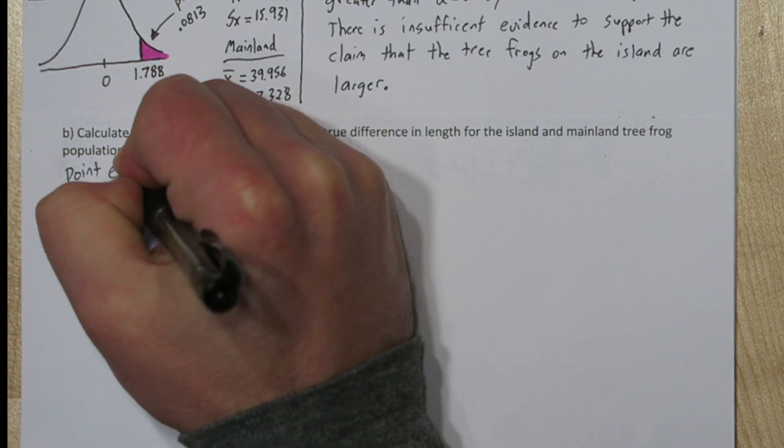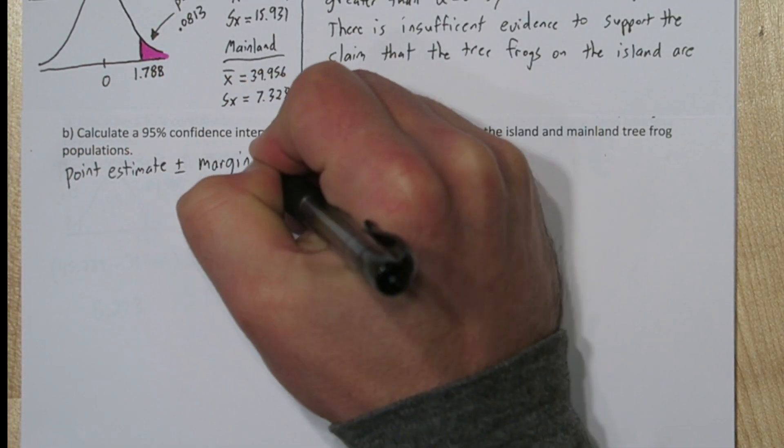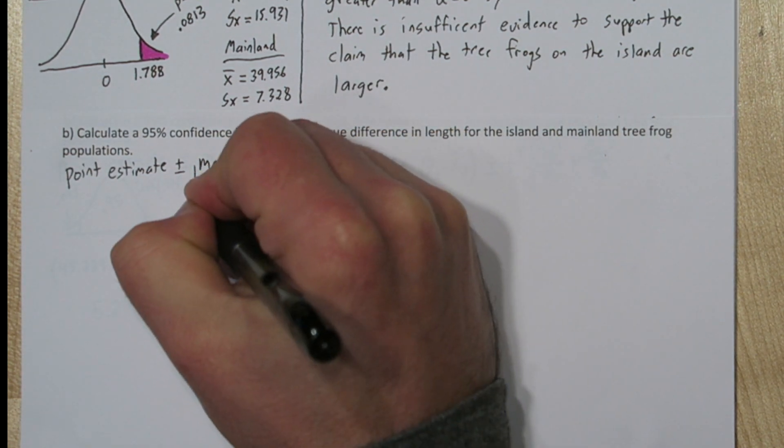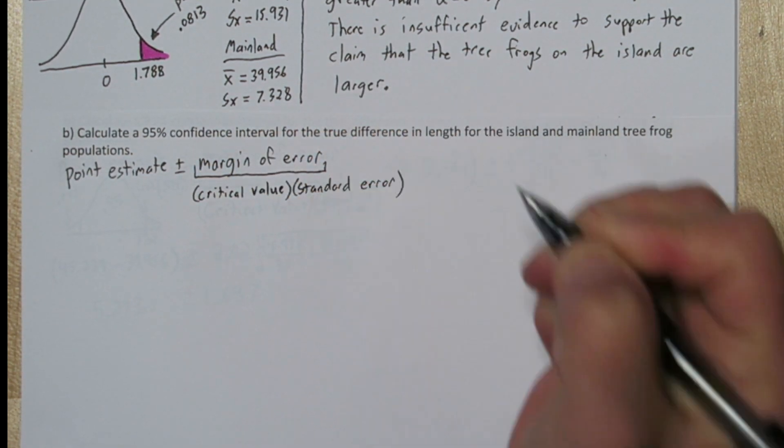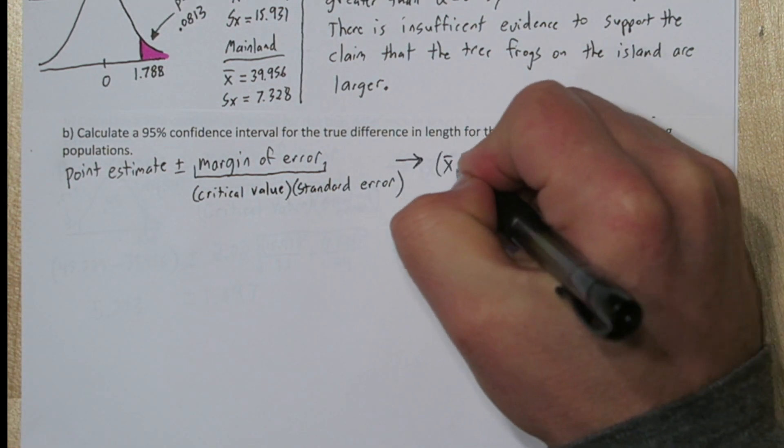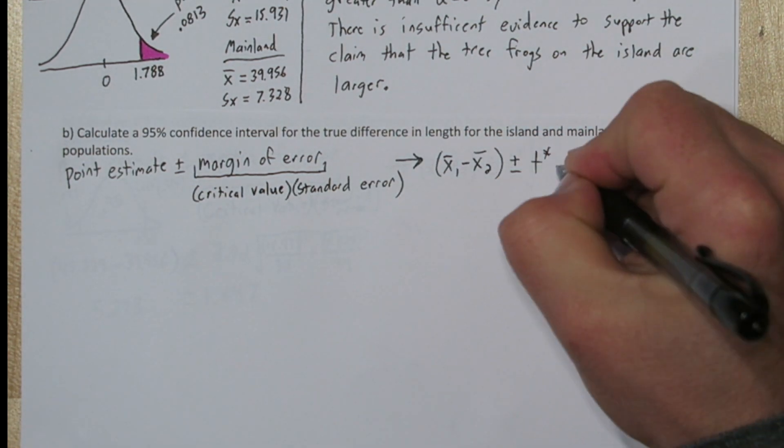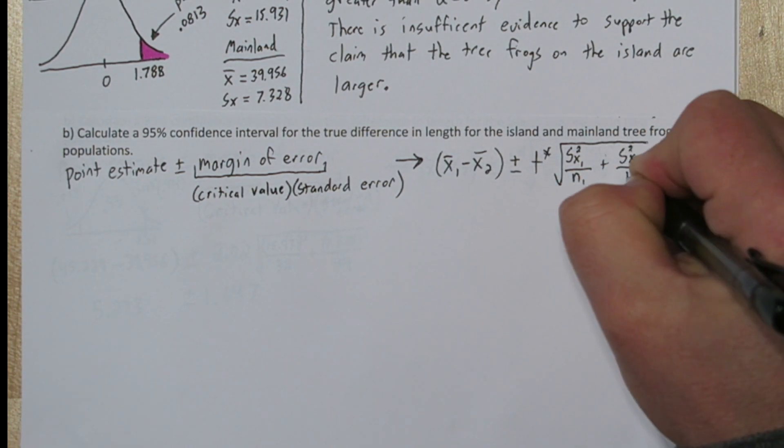Every confidence interval is a point estimate plus or minus a margin of error, and the margin of error is the product of the critical value times the standard error. So in our case the point estimate is going to be the difference between the sample means, and we're going to add and subtract T star times this formula for standard error.